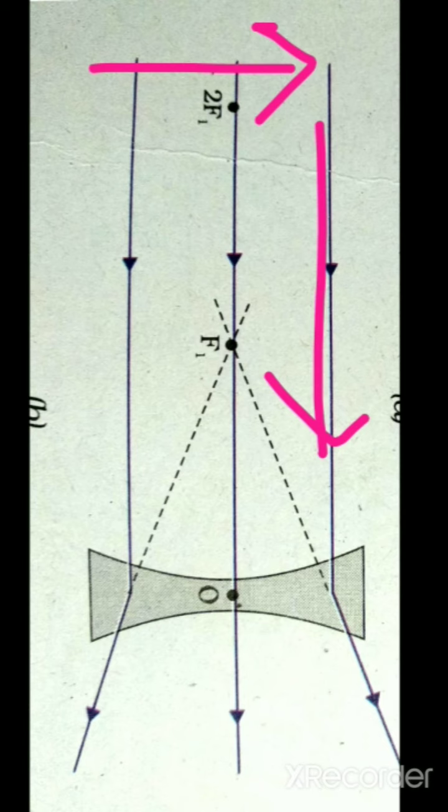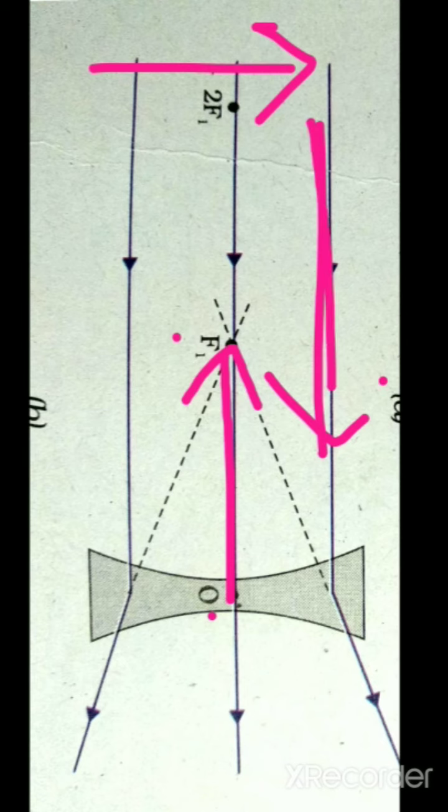Again here if I want to measure the focal length, I have to start measurement from optical center. So I will measure the distance from O to F1. So just see here also. This is the direction of light and this is the direction of measurement of focal length. Again both the directions are opposite. So here for a concave lens also, the focal length is negative.